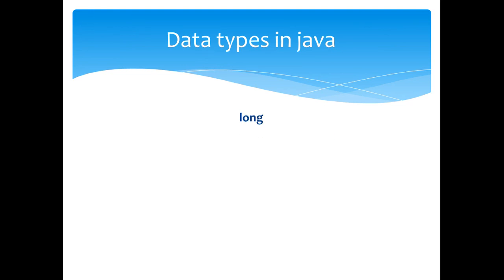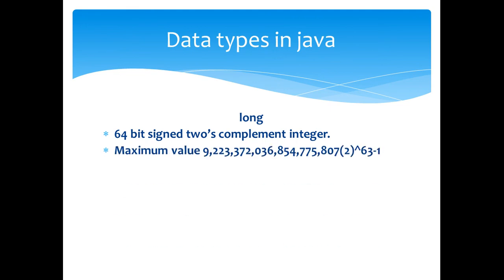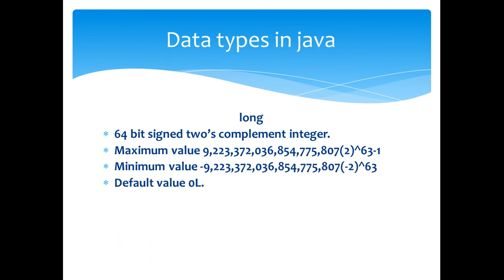The next type is the long type. It is a 64-bit signed two's complement integer. Maximum value and minimum value are shown here. The default value is 0L. Example values are shown here.